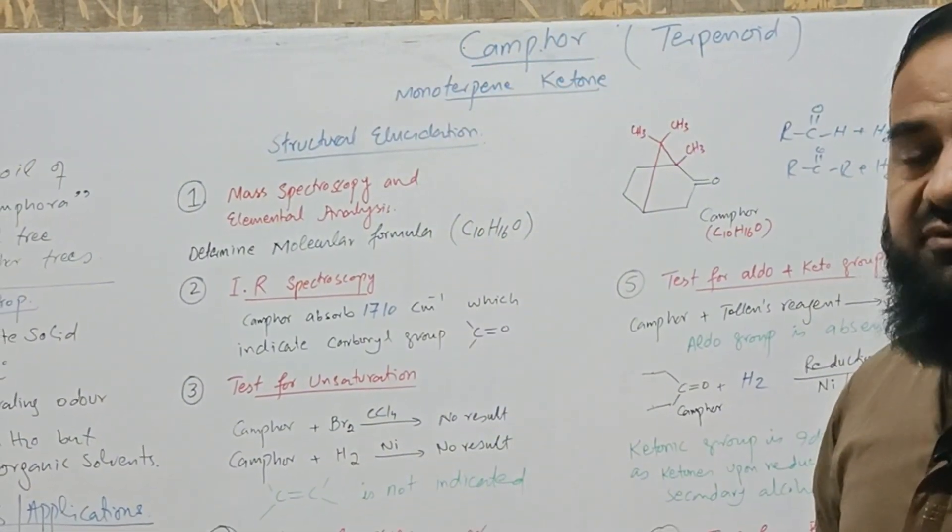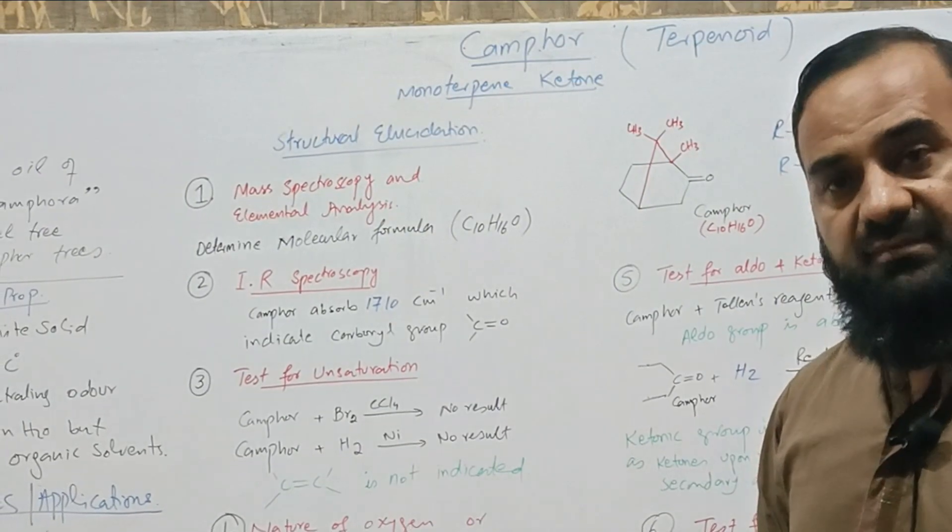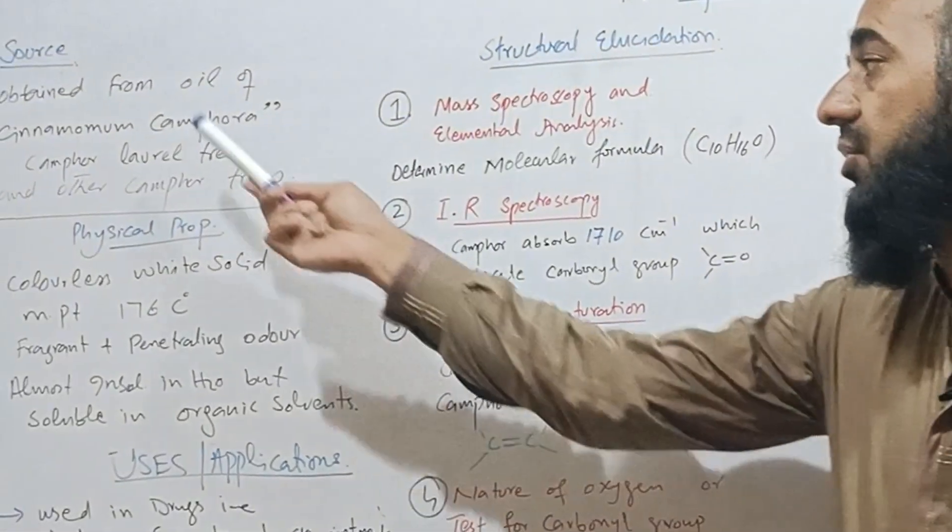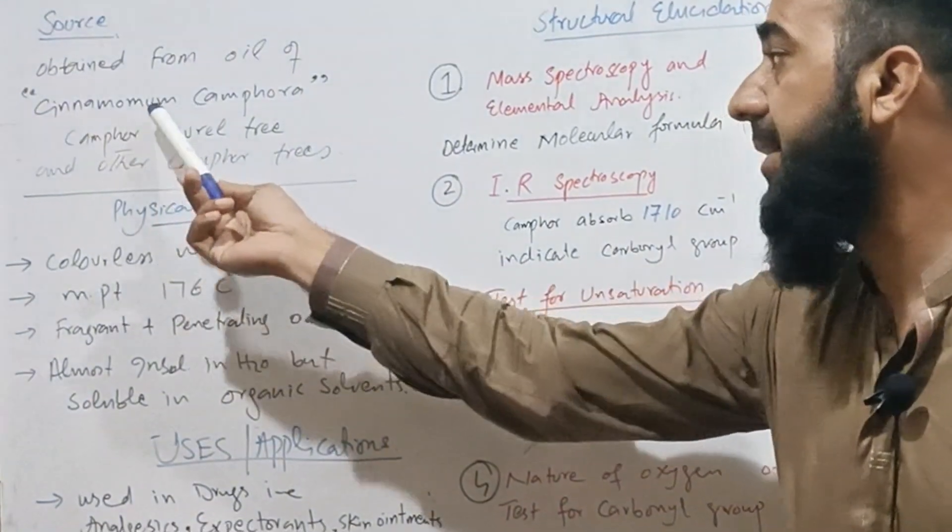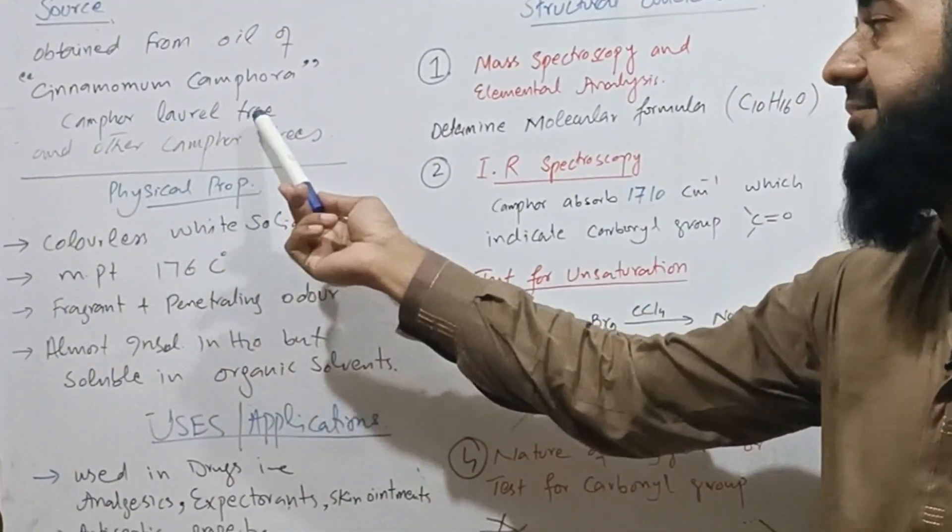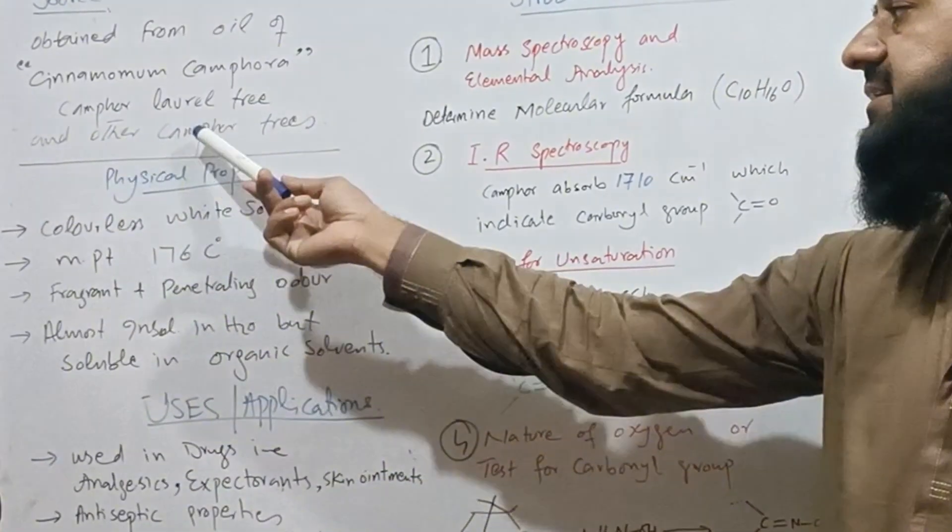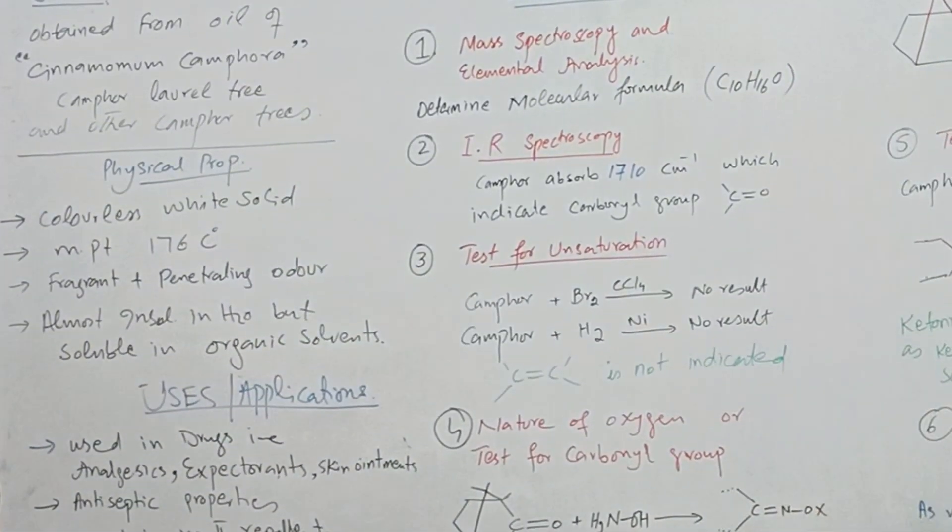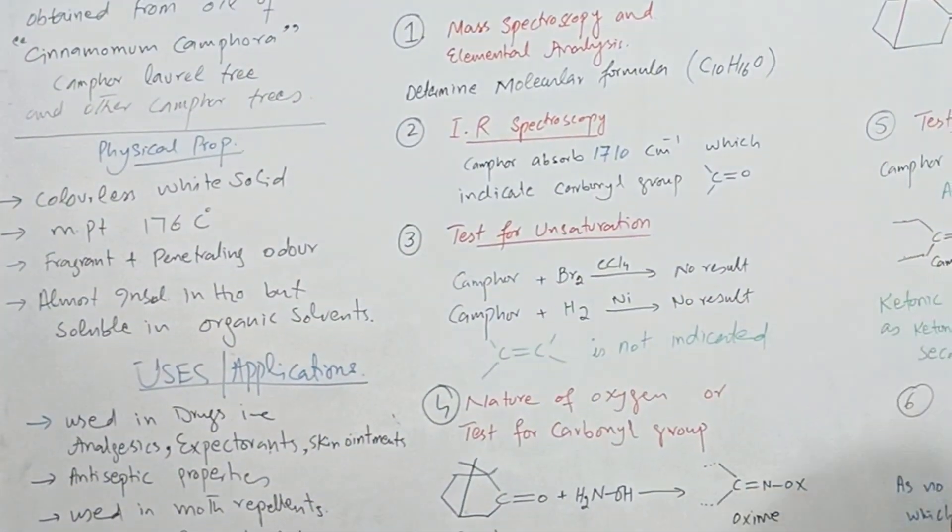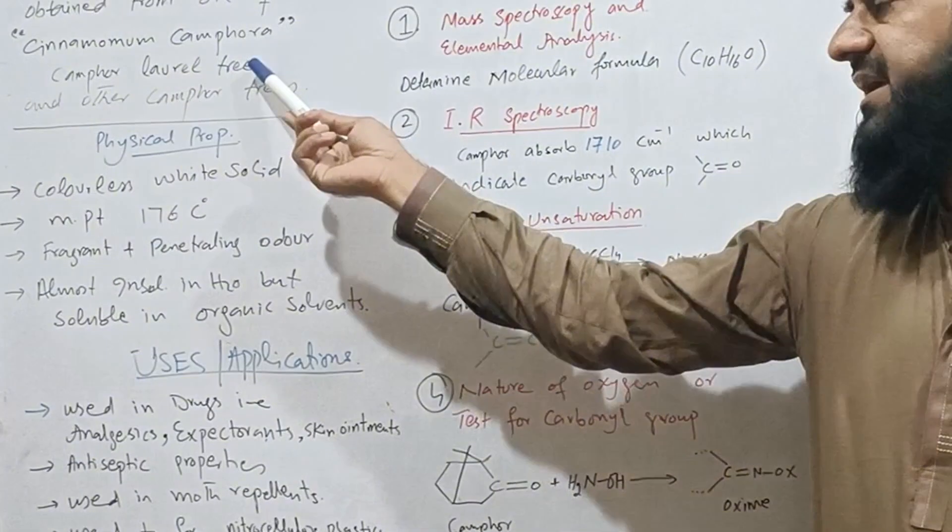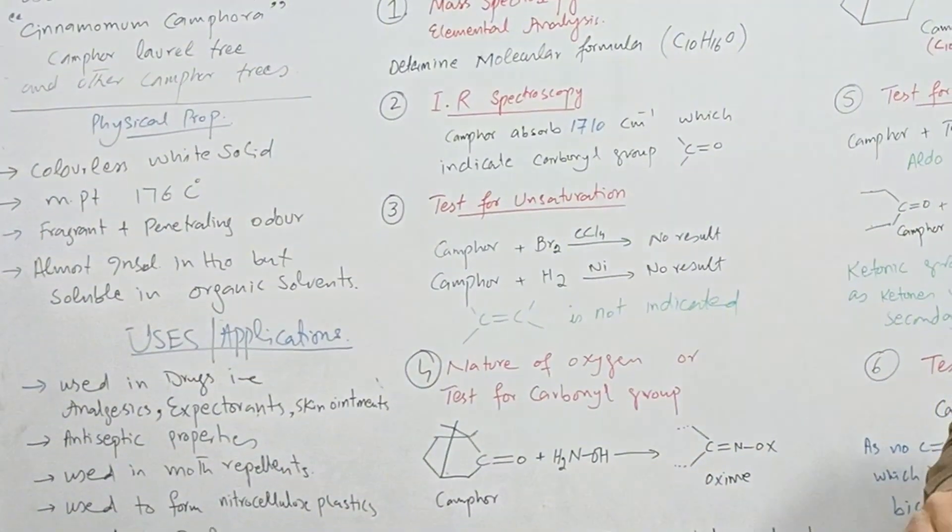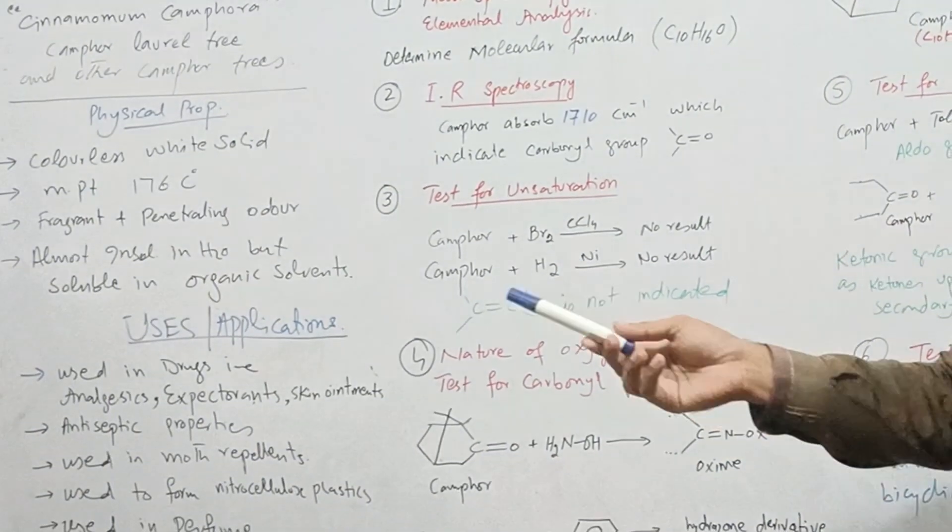As other terpenoids are obtained from plant essential oil, this is also obtained from the oil of Cinnamomum camphora, commonly called as camphor laurel tree. It can also be obtained from other camphor trees, so mostly the common source is this tree. From the leaves of this tree through steam distillation we can isolate it.